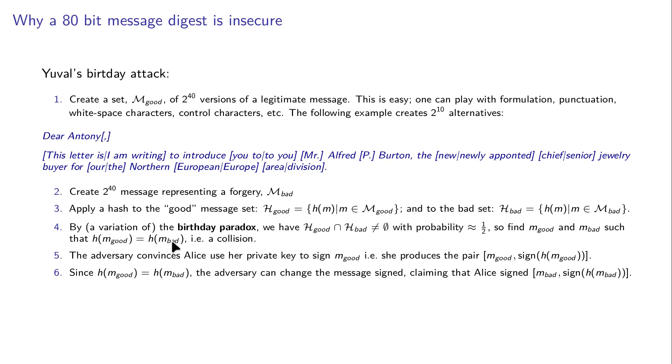And now what the adversary does is convinces others maybe to use her private key to sign the good message. But now since the hashes are the same, the adversary can change the message that has been signed and claim that Alice signed a bad message. So this is a summary of Yuval's birthday attack. You may change the parameters slightly but essentially this is very very worrying.